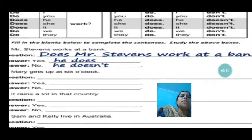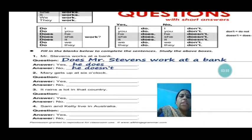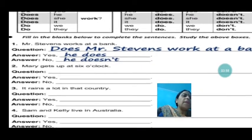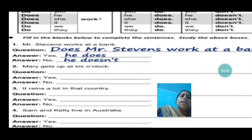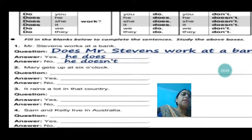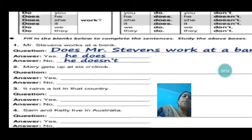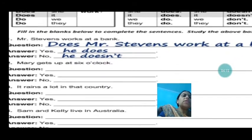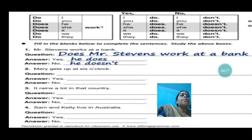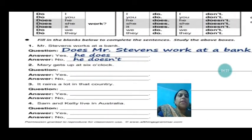The next question: Mary gets up at 6 o'clock. How will you form the question? Does Mary get up at 6 o'clock? Mary is in the singular form and present tense, so before Mary we use does, and gets becomes get. If she gets up, the answer is yes, she does. If she doesn't, no, she doesn't.